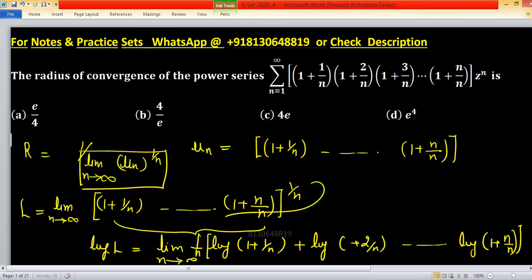Now, which one option is giving you e upon 4? Option a will be right one.